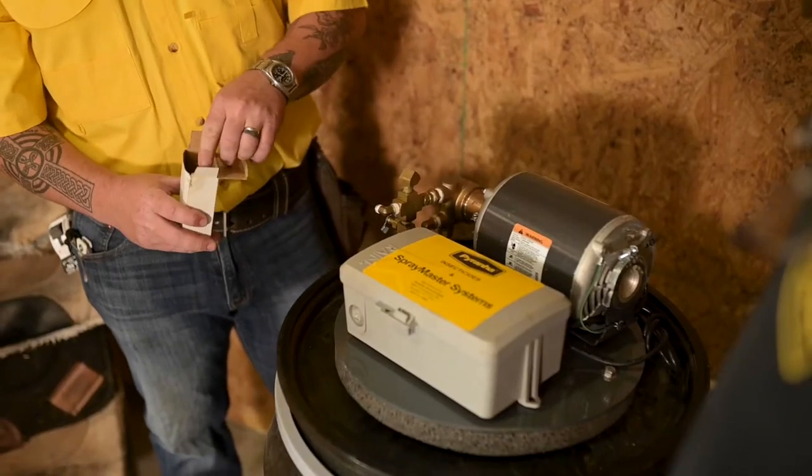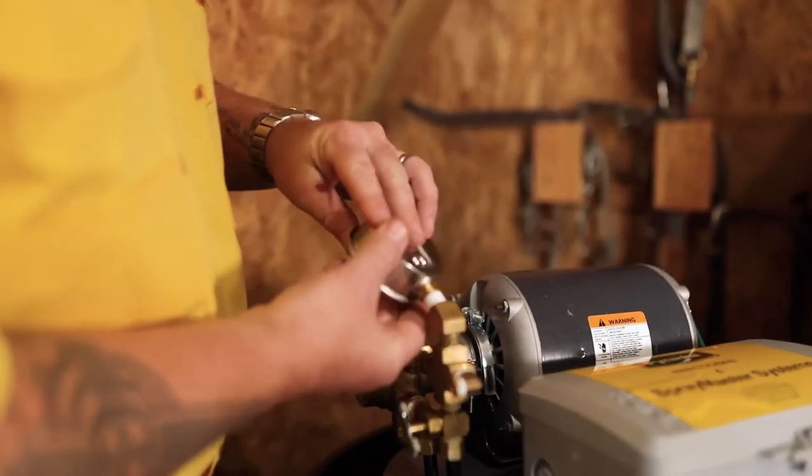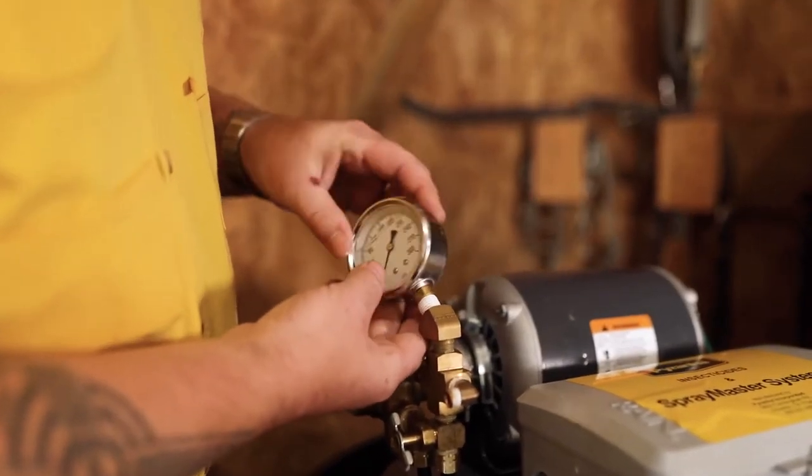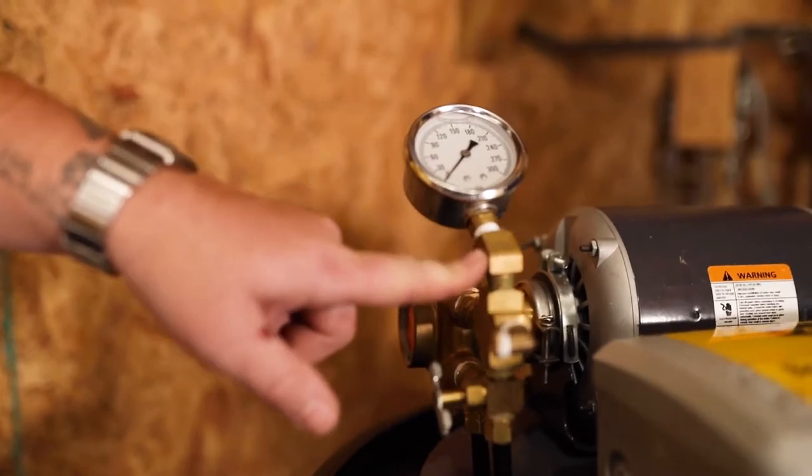Remove the pressure gauge from its package and screw it into the top of the brass cross assembly. Make sure that the male elbow points away from the timer.